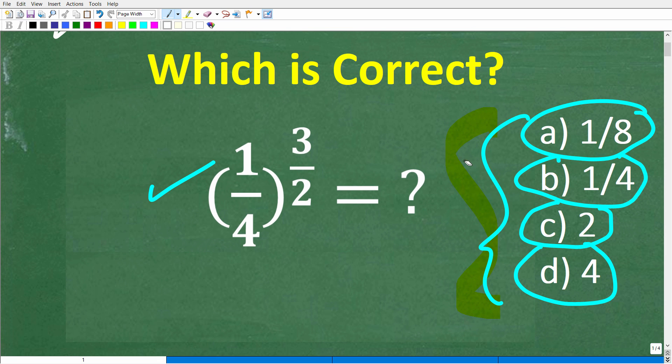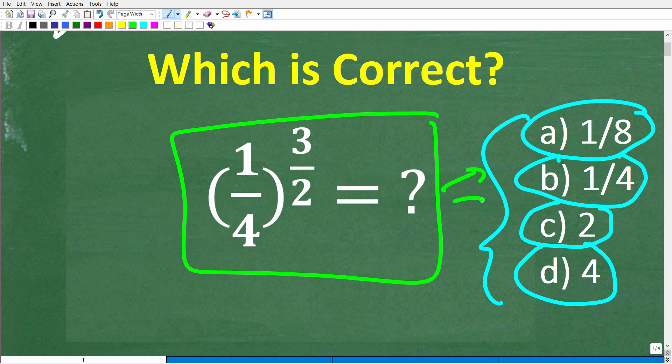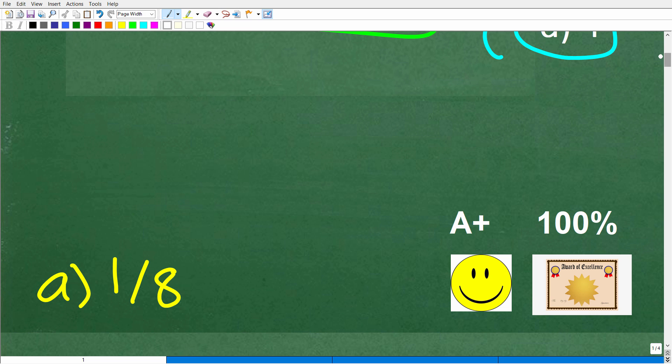All right, so let's take another look at this problem. It seems like it's a pretty straightforward question. One-fourth to the three-halves power. Now, we're not going to use our calculator, but this entire expression right here is equivalent to one of these answers. And let's take a look at the correct answer right now. The correct answer is A, one-eighth.